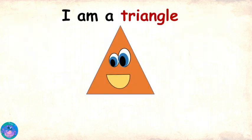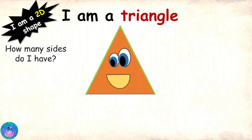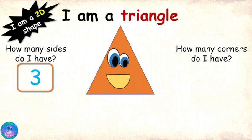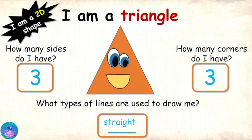Hey there! I am a triangle. I am a 2D shape. How many sides do I have? 1, 2, 3 sides! And do all of your sides have to be of the same size? Not necessary at all! My sides could be of the same size or could be of different sizes. And now you tell me — how many corners do I have? 1, 2, 3! That's right! What type of lines do I use to draw me? Straight or curved? Straight lines! Very good!